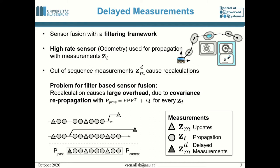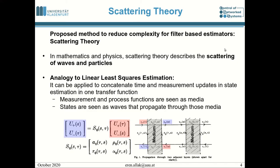The covariance propagation is given by P equals F P F-transpose plus Q. The solution we propose to reduce the computational complexity is called scattering theory. It is found in mathematics and physics, where it describes the scattering of waves and particles, but it also has a nice analogy to linear least squares estimation.